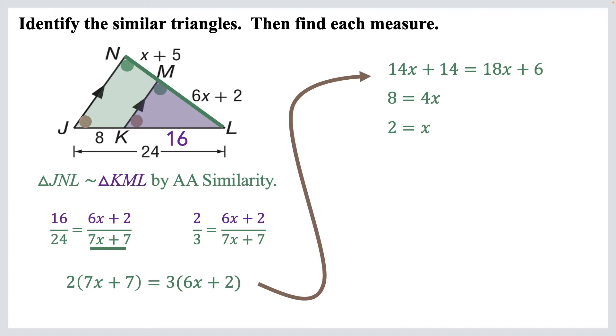Now, it didn't want us to find X, did it? It wanted us to find each measure. So we need to know the side lengths of each of those triangles. Well we know that X plus 5, that's NM, sort of at the top left there, that's 7.